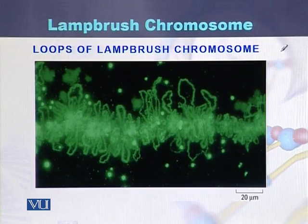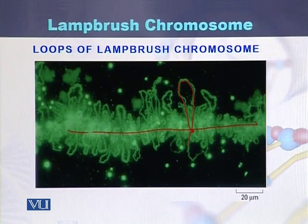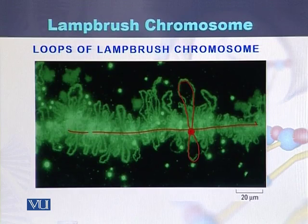In the diagram of a lamp brush chromosome, we can see that there is a central axial region, and on both sides of this central axial region there are loops. Each loop is attached to the central axial region. Lamp brush chromosomes consist of loops which are attached to the central axial region.